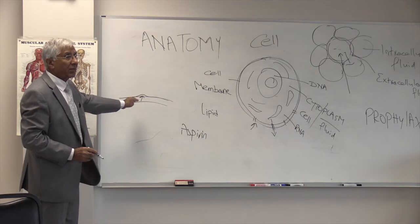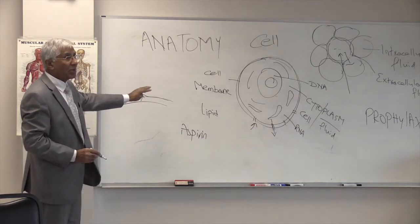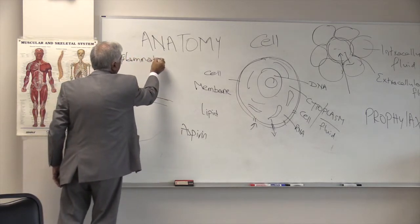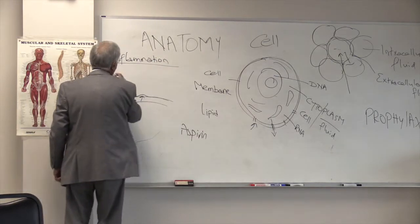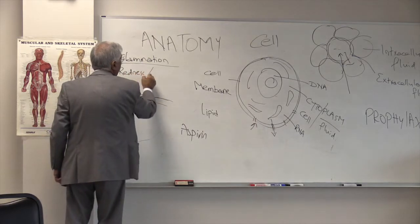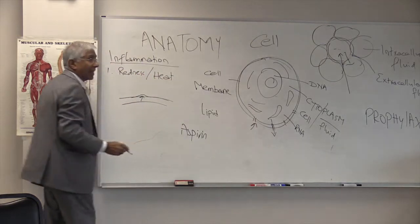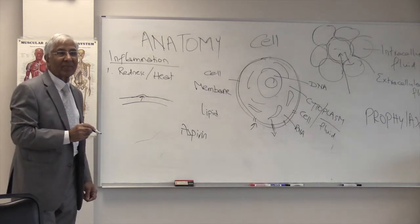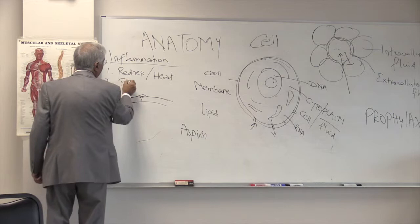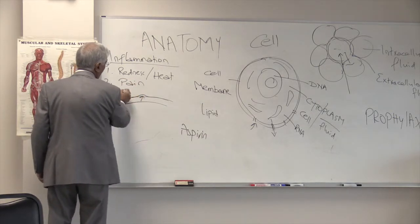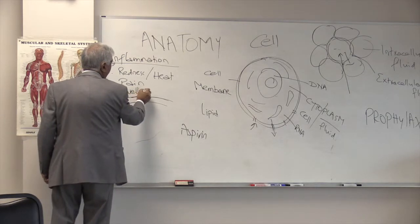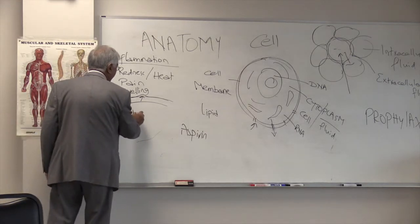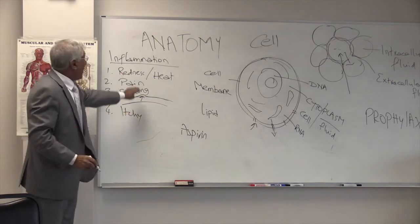What do we have generally in the case of an injury, swelling, or inflammation? What are the typical signs of inflammation? Redness — okay, redness. And then there's heat. And what else? Pain — yes, you have pain. And of course there's swelling. Sometimes it is also itchy.